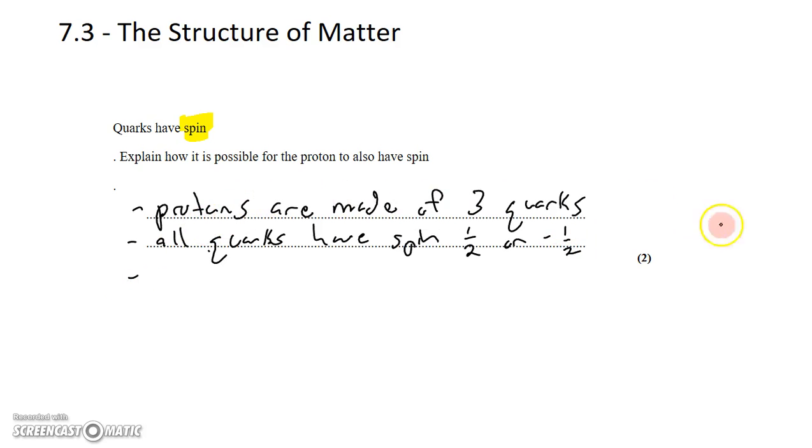And what that means is that if you get three quarks together in a proton, there's no way that three lots of halves and negative halves can add up to zero. So therefore, there must be spin remaining when three quarks combine.